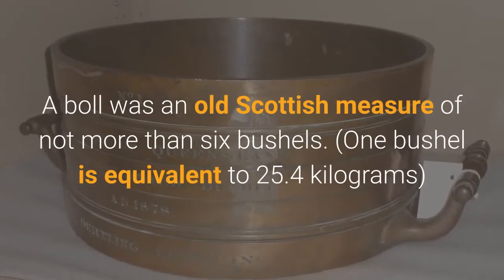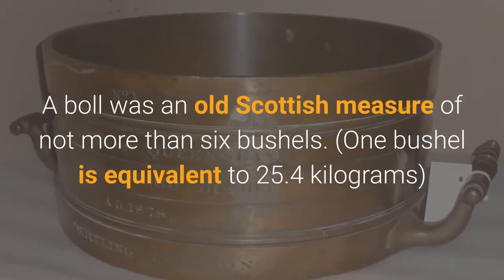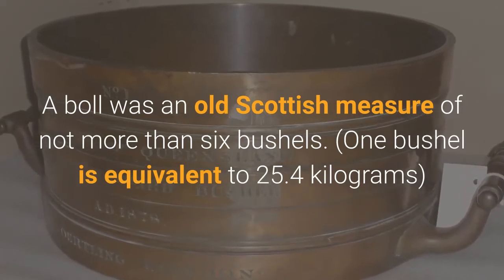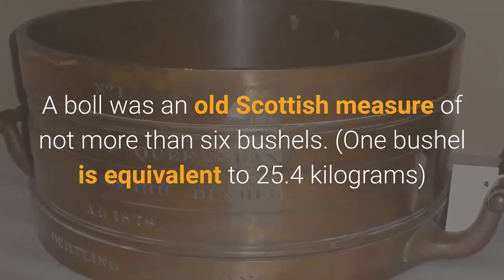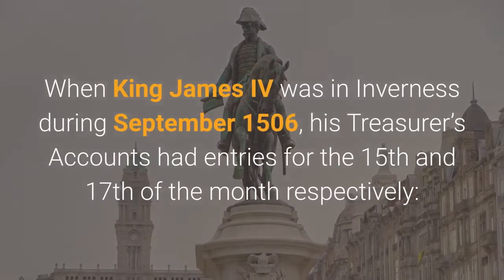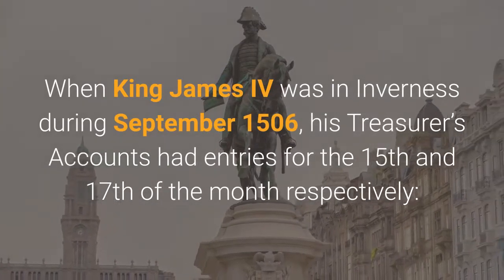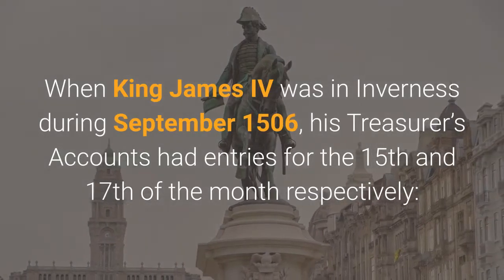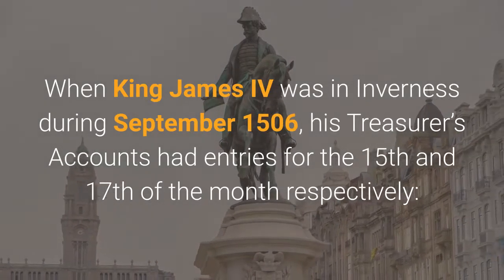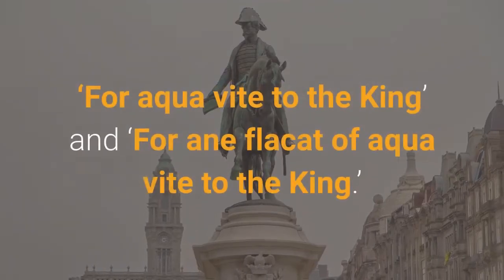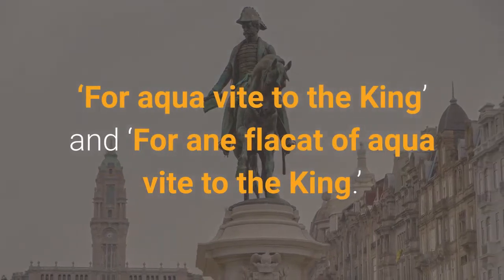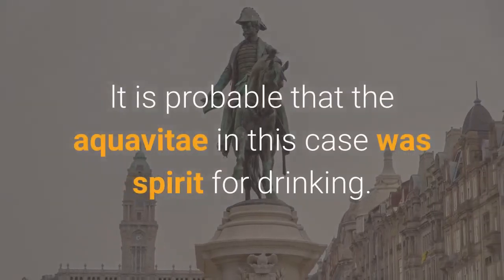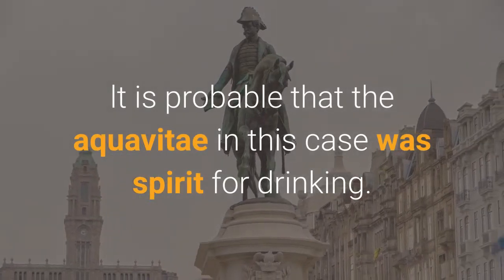A boll was an old Scottish measure of not more than six bushels, and one bushel is equivalent to 25.4 kilograms. When King James IV was in Inverness during September 1506, his treasurer's accounts had entries for the 15th and 17th of the month respectively for aqua vitae to the king, and for a flacon of aqua vitae to the king's lieutenant — it is probable that the aqua vitae in this case was spirit for drinking.